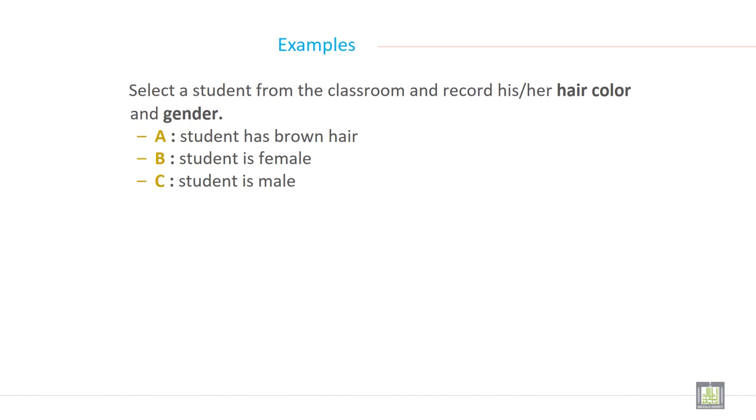Select a student from the classroom and record his or her hair color and gender. A: a student has brown hair. B: a student is female. C: a student is male.